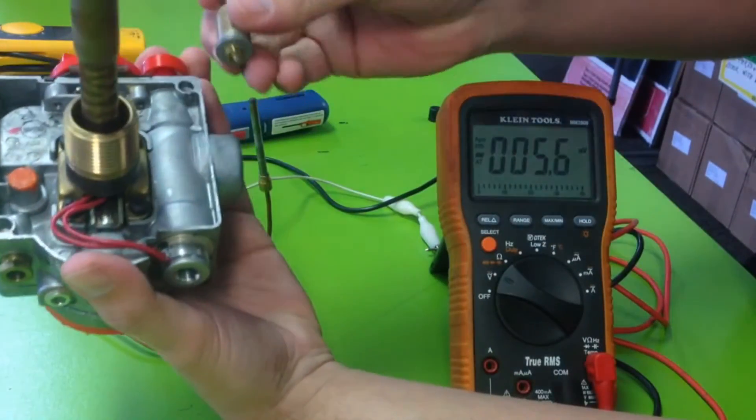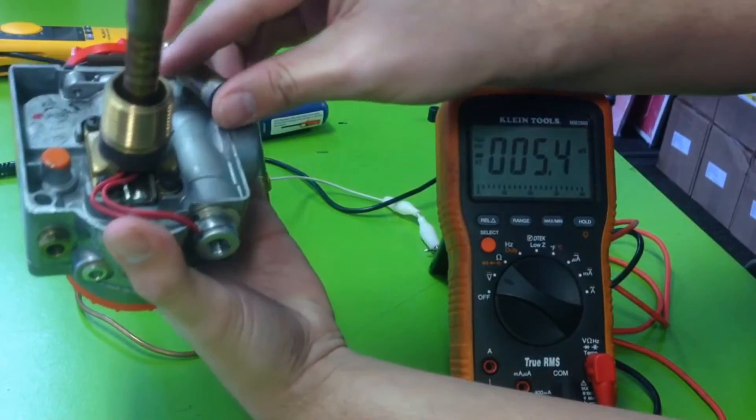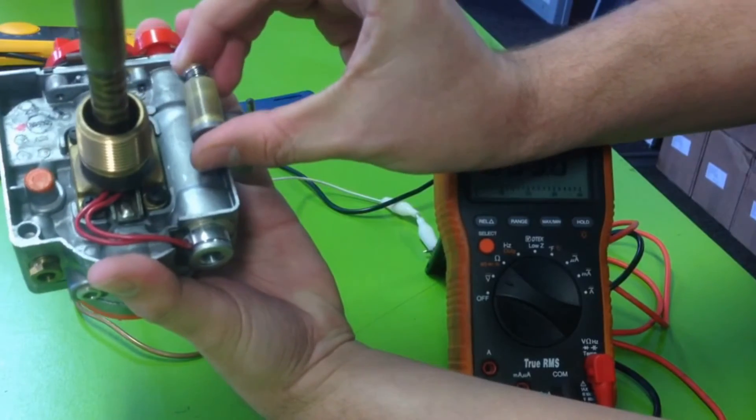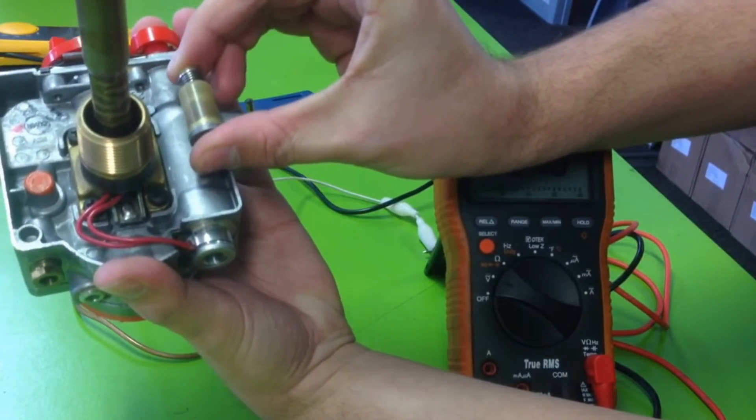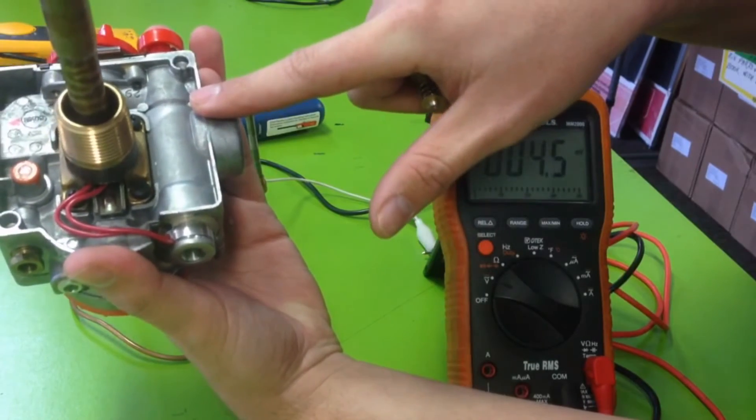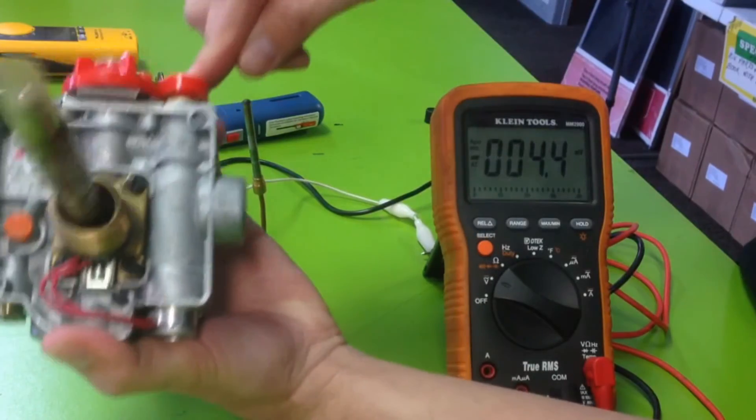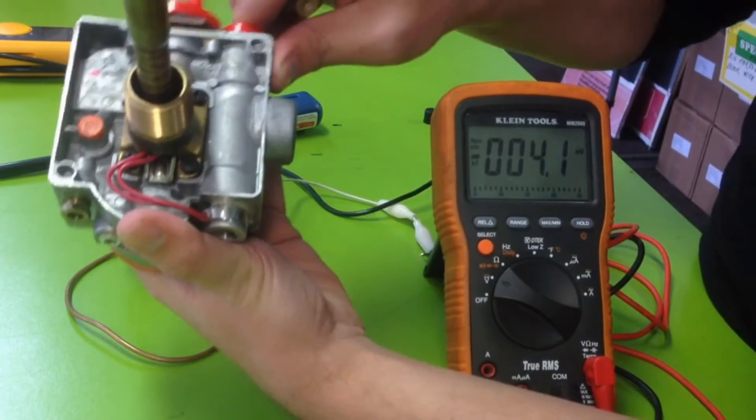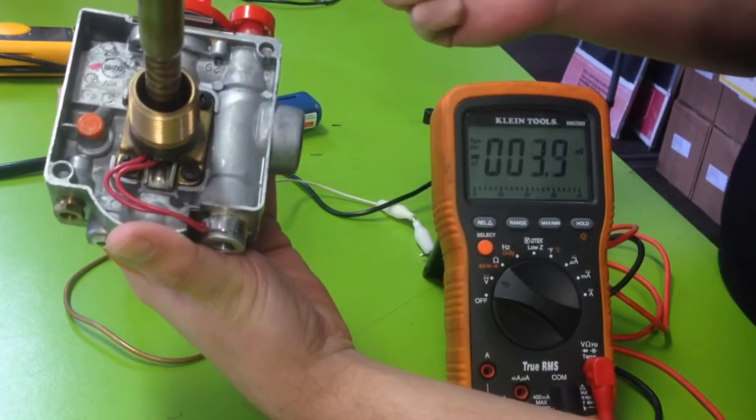So when I press that button, this internal piece goes down and makes contact and it stays depressed, which lets the gas flow through the inlet. Basically, if you press your button down on your control or your furnace, whatever you're working on, and it's not staying depressed when your pilot's lit, you probably have a bad thermocoupler or bad control.